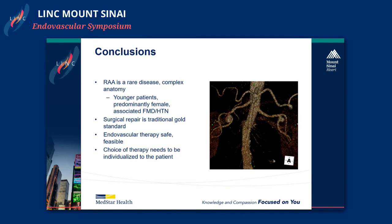So renal artery aneurysm is a rare disease with complex anatomy, and these tend to be younger patients. Surgical repair is the gold standard, but endovascular therapy is safe.